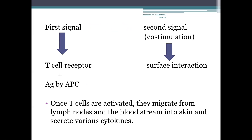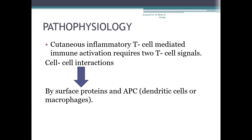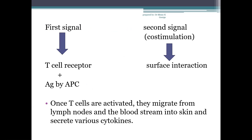It needs two T-cell signals. The first signal is the interaction of the T-cell receptor with antigen presented by the antigen-presenting cell. The second signal, also known as co-stimulation, is mediated through various surface interactions. Once T-cells are activated, they migrate from lymph nodes and the bloodstream into skin and secrete various cytokines — primarily interferon-gamma and interleukin-2 — which induce the pathological changes of psoriasis.